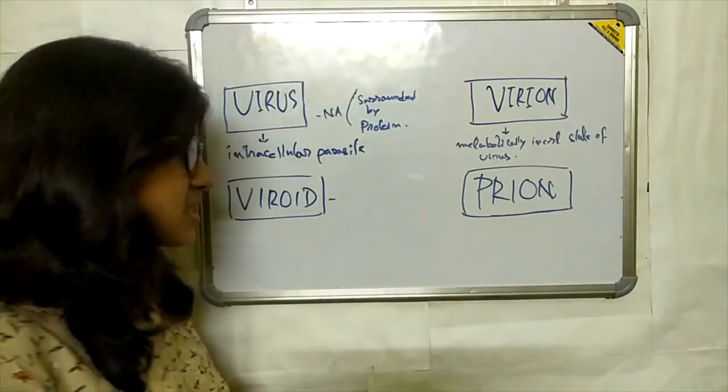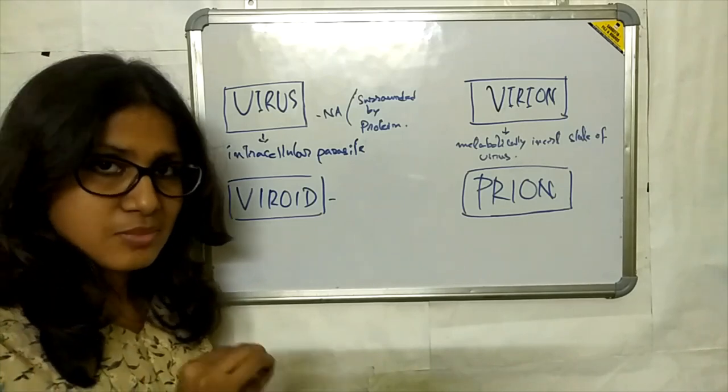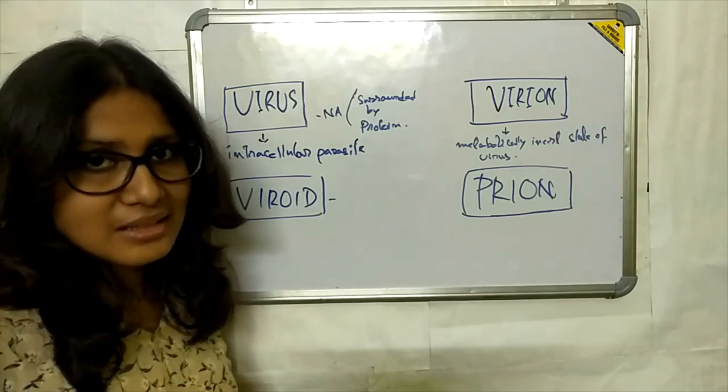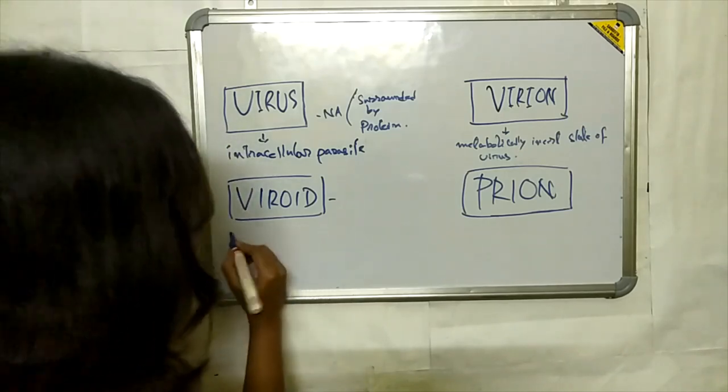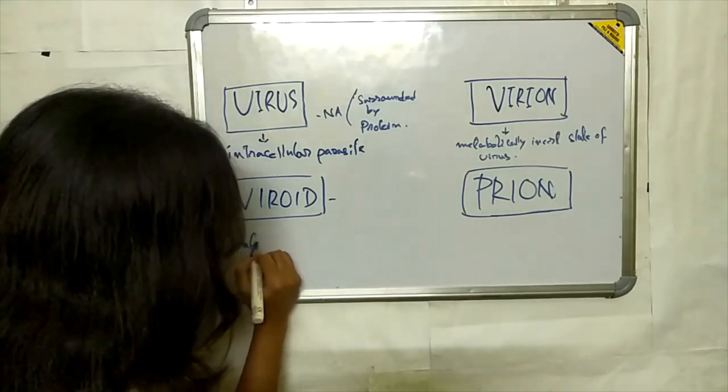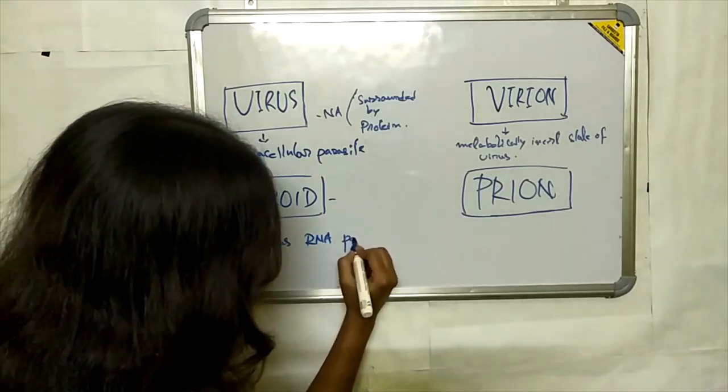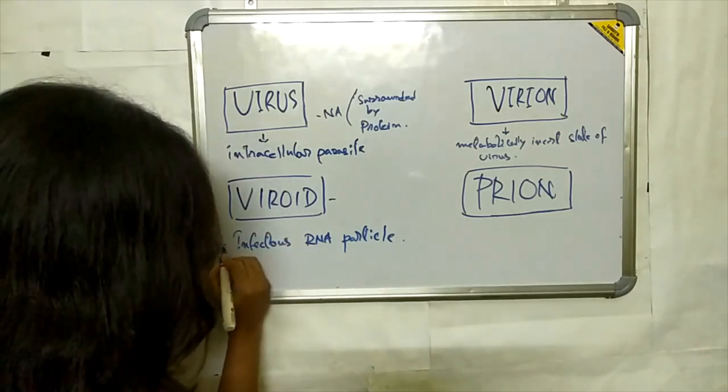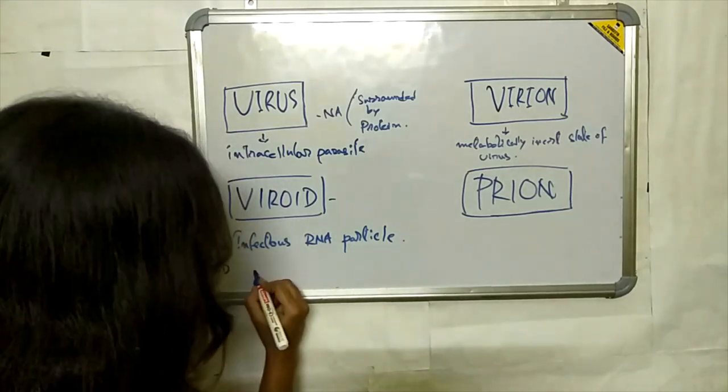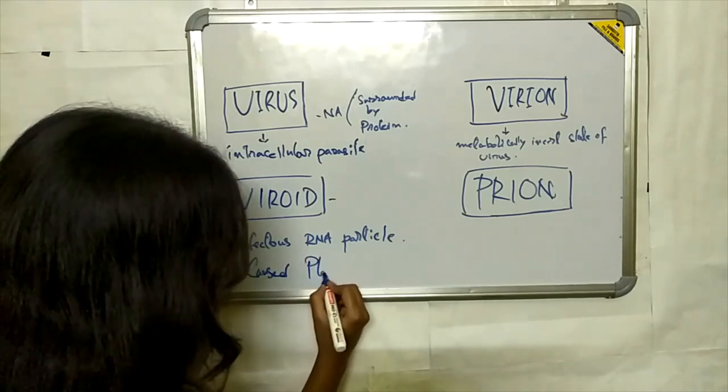Next come to the viroid. Viroids are infectious RNA particles, only a few hundred nucleotides long. They mainly infect plants and cause many plant diseases.